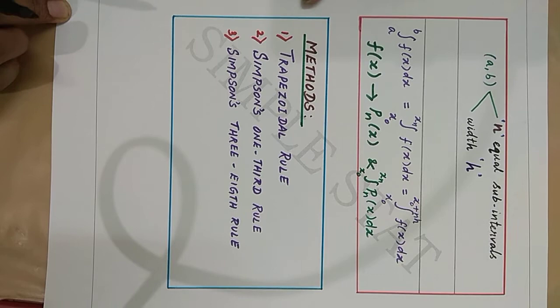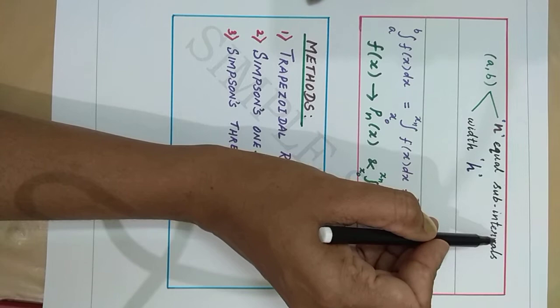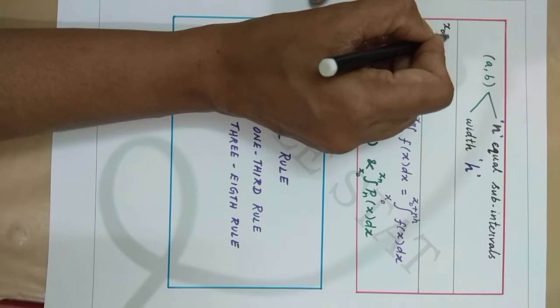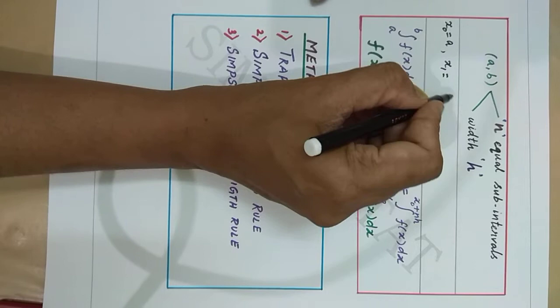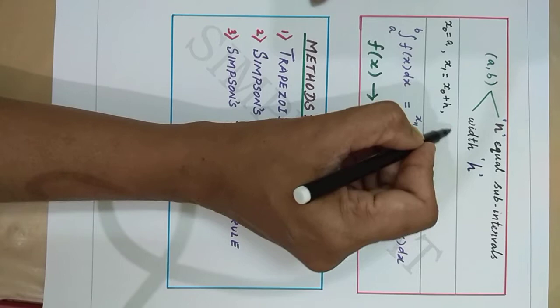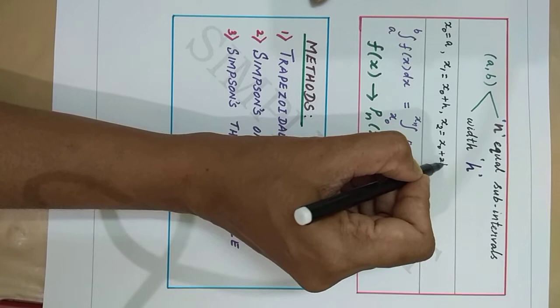Now, dividing the interval [a, b] into n equal subintervals of width h, we can write: x naught equals a, x1 equals x naught plus h, x2 equals x naught plus 2h, and so on.